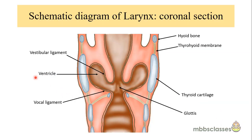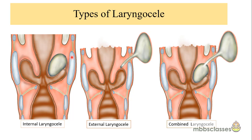To understand the different types of laryngocele, let us refresh the anatomy of the larynx. We can see the vestibular fold, vocal ligament, ventricle, hyoid bone, thyroid cartilage, and thyrohyoid membrane. The saccule is located in the ventricular area. In the internal laryngocele it is confined within the thyroid cartilage. In the external type it pierces the thyrohyoid membrane and presents as a mass in the neck. The combined type has components both outside and inside the thyroid cartilage.